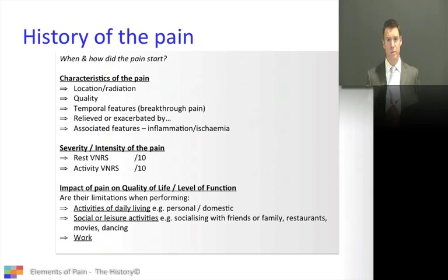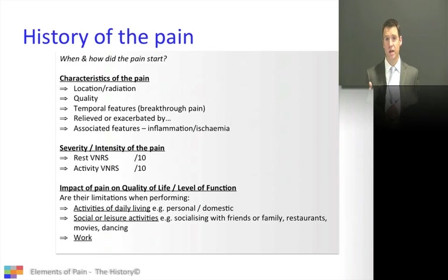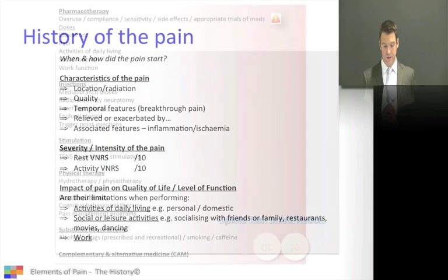Is the patient able to look after themselves? Is the patient able to do cooking and cleaning and domestic chores? How does this affect the patient's ability to socialize and work? So from the history of the pain you're looking at characteristics, intensity and severity, and the impact on the patient.